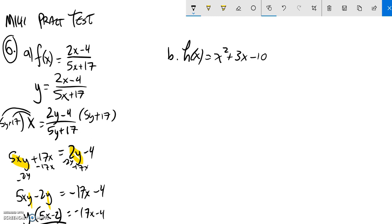Final step to get y all alone, divide by the 5x minus 2. So I end up with y equals negative 17x minus 4 over 5x minus 2.